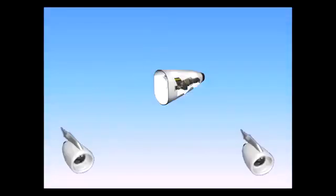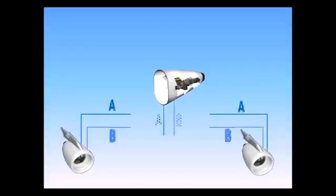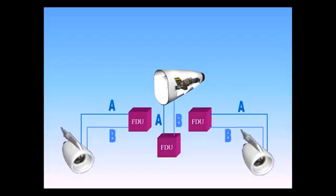The engines and APU have individual fire detection systems. Each system consists of two identical detection loops A and B mounted in parallel, and a fire detection unit FDU.